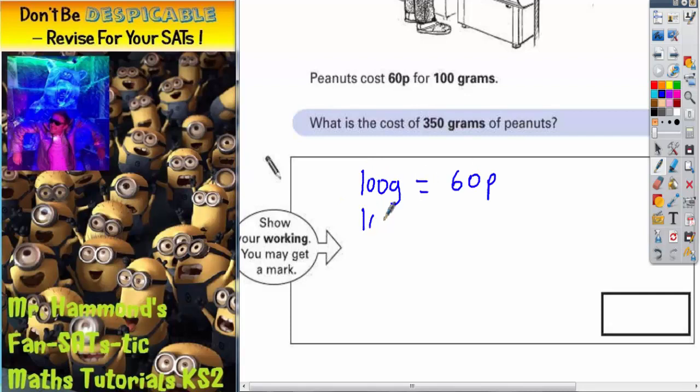The next 100 grams is going to cost us 60p. And all I'm doing is counting up until I've got 350 grams. Well, that's 200 so far. Another 100 grams is another 60p, so that's 300. And we will need another 50 grams.